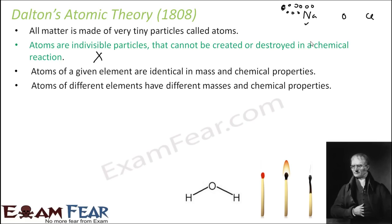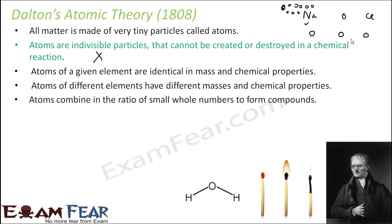Atoms of different elements have different mass and chemical properties. For example, one atom of sodium, one atom of oxygen, and one atom of chlorine — all three will have different mass and different chemical properties. Atoms combine in a ratio of small whole numbers to form a compound; for example, water has two hydrogen and one oxygen combined in a whole number ratio.